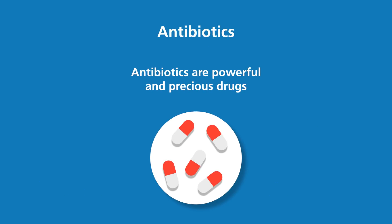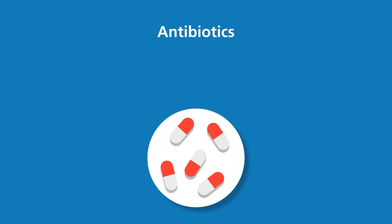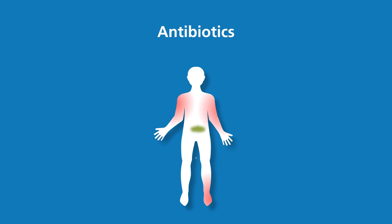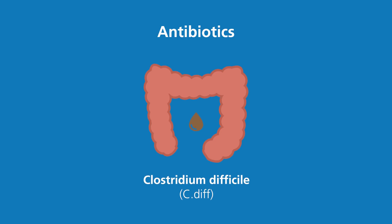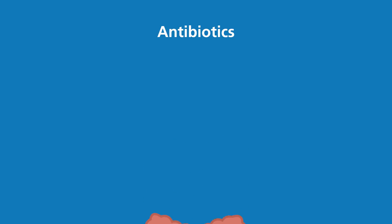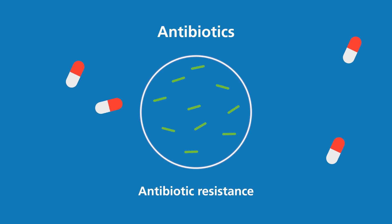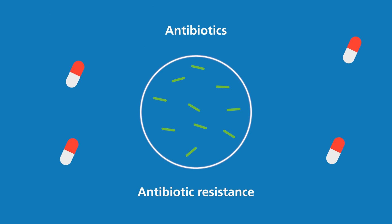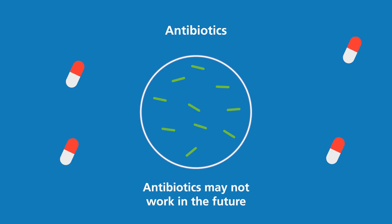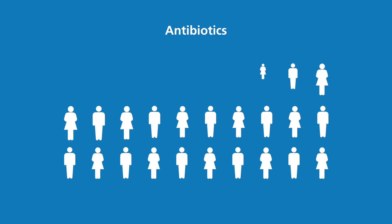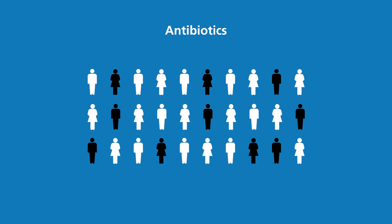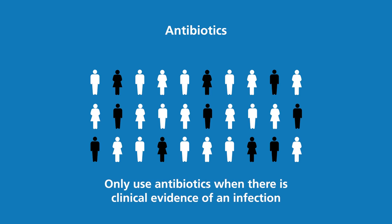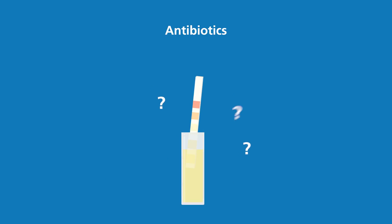Antibiotics are powerful and precious drugs. Giving an older person antibiotics when they don't need them can lead to side effects such as rashes, stomach upsets or drug interactions. Clostridium difficile diarrhoea, or C. diff, is a life-threatening infection of the bowel caused by antibiotics. Antibiotic resistance happens when bacteria are exposed to an antibiotic and then adapt so they are no longer killed by it, meaning antibiotics may not work in the future. Many older people treated with antibiotics for asymptomatic bacteriuria will suffer some type of side effect, so it is important to only use antibiotics when there is clinical evidence of an infection, rather than using the urine dipstick result to guide decision making.